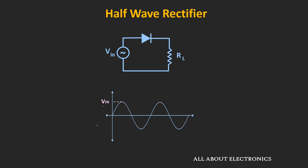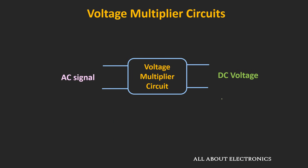In case of a rectifier circuit, if we apply an AC signal with a peak amplitude of Vm, at most we can get a DC output of Vm. But in case of the multiplier circuit, the output is n times the peak amplitude — that means the DC voltage will be n times Vm.